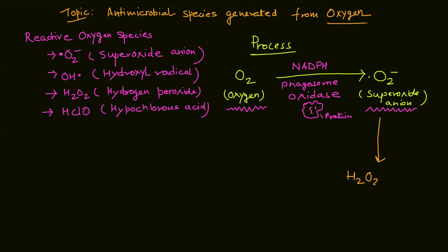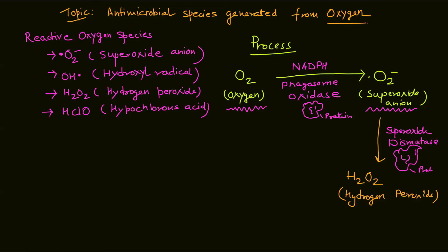After that, this superoxide anion gets converted to H2O2, hydrogen peroxide. This is an important step where there is a production of H2O2, and the production of H2O2 is regulated by superoxide dismutase — an important biochemical enzyme represented here as a protein.